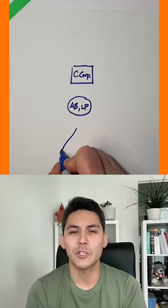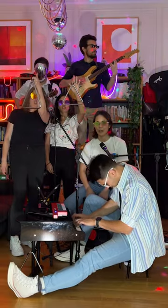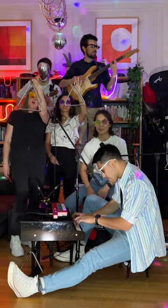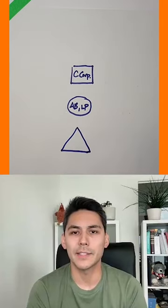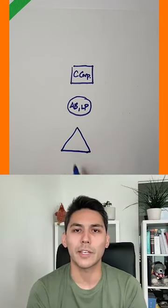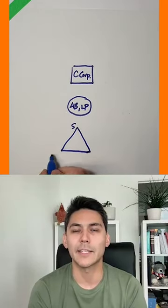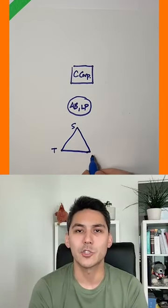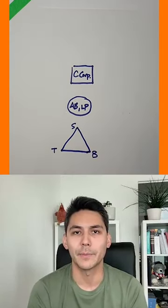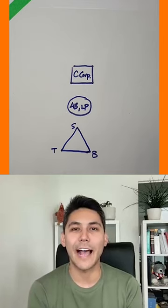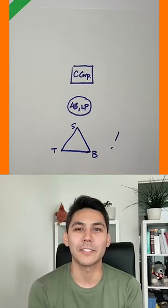Then we have trusts, which we diagram with a triangle because the triangle visually represents the three parties to a trust, namely the settlor, the trustee, and the beneficiary. And finally, we have individuals. We can put their name or usually initials, so let's say A and B for Allison and Ballard.